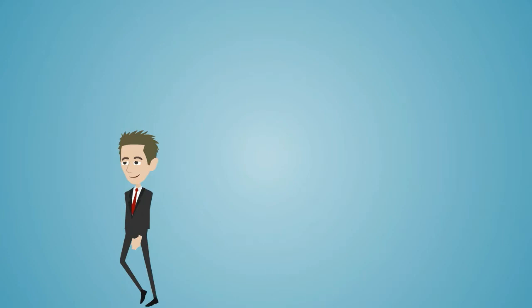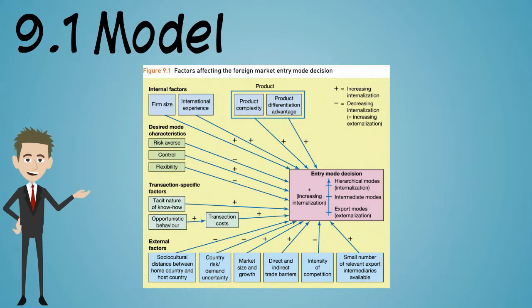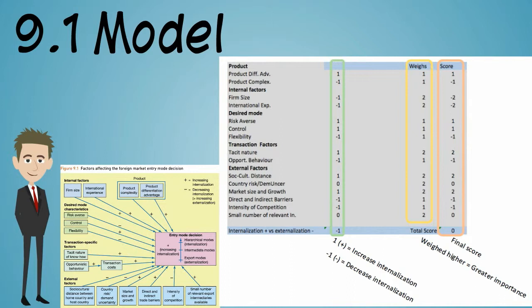Now let's look at the key factors affecting Korsberg på Bagen's entry mode to the Swedish market. To do this, we have utilized the 9.1 model as you can see next to me. After rating and weighing all these factors, we concluded that Korsberg på Bagen fits best in the category of intermediate entry modes because they scored zero in the 9.1 model.